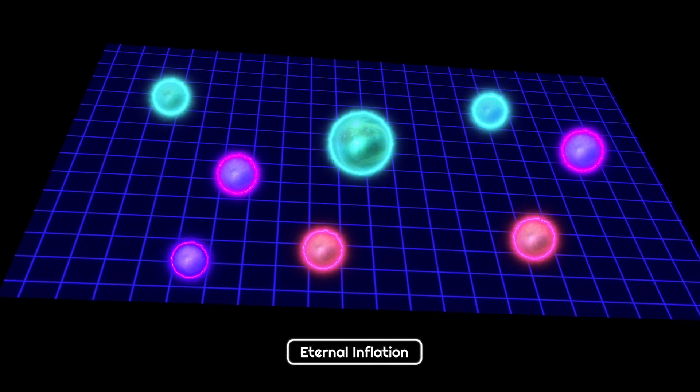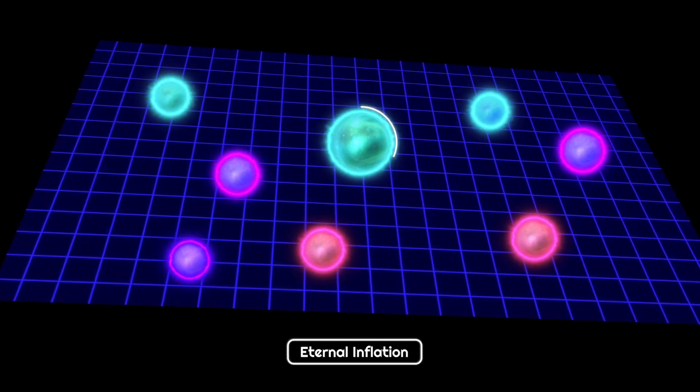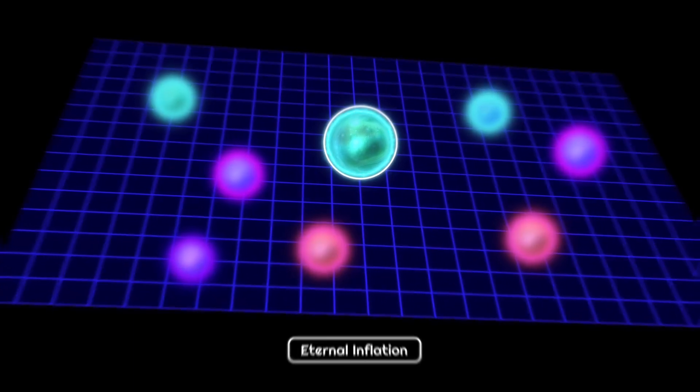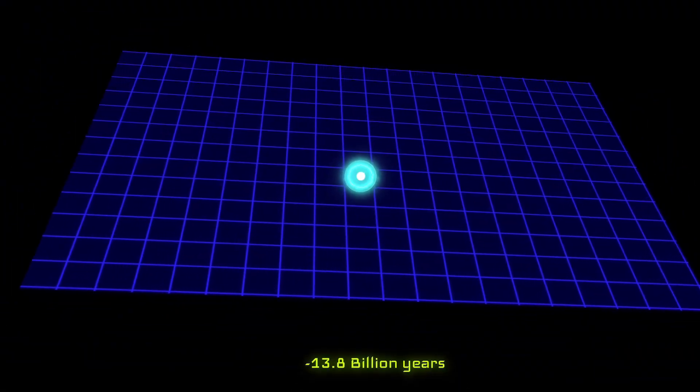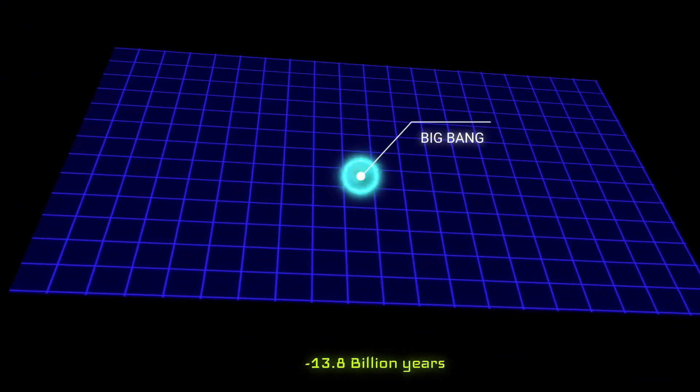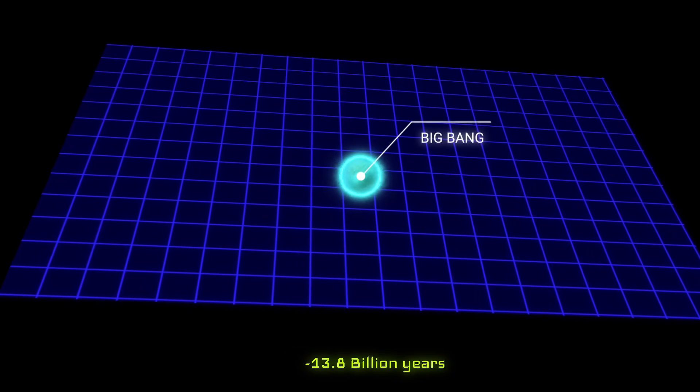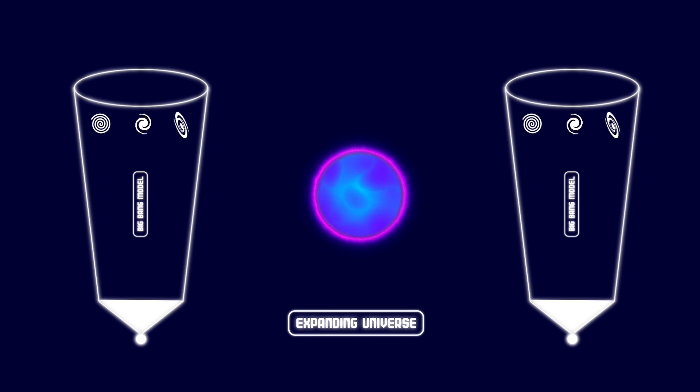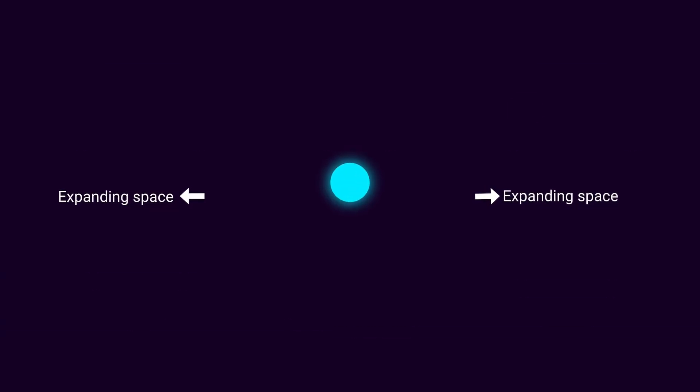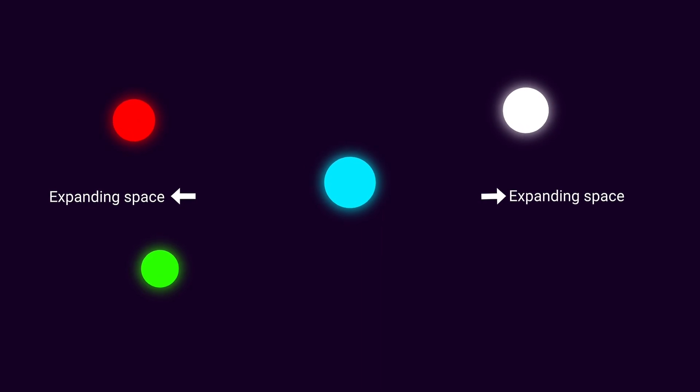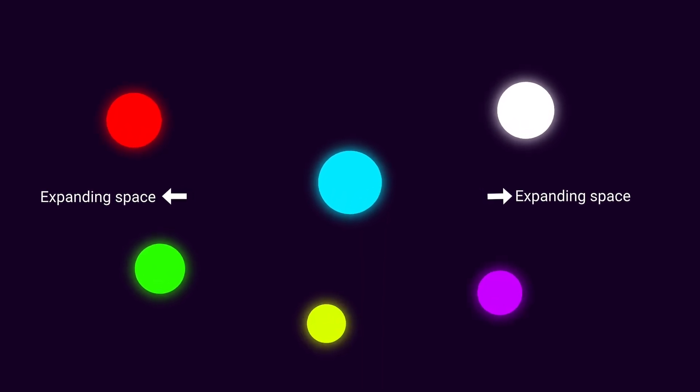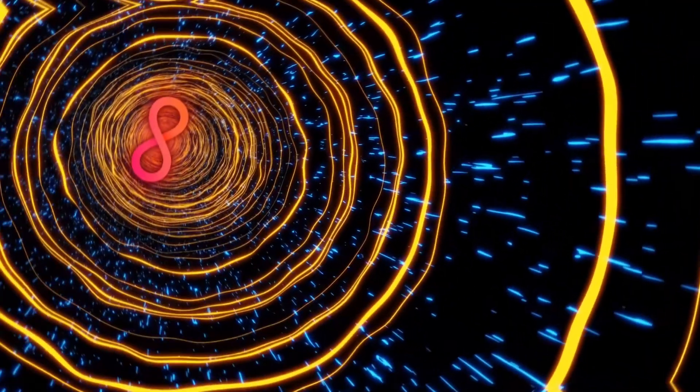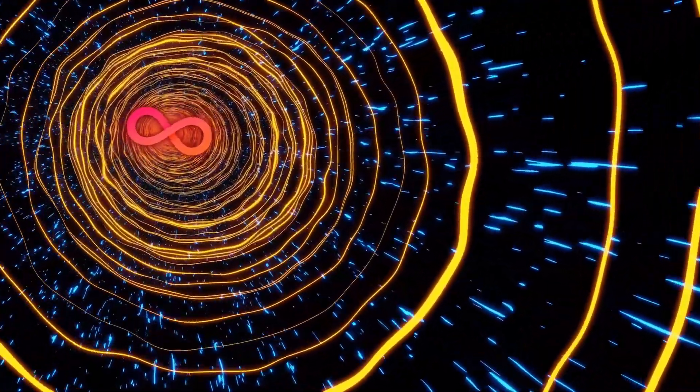According to this eternal inflation theory, our universe is just one of the other universes. 13.8 billion years ago, inflation happened in a particular place, and then our universe formed. It is true that inflation took place and our universe formed, but that inflation didn't stop everywhere in space. This means inflation, or the Big Bang, happened everywhere in space, and inflation still continues somewhere in space. It creates countless universes in the expanding space.